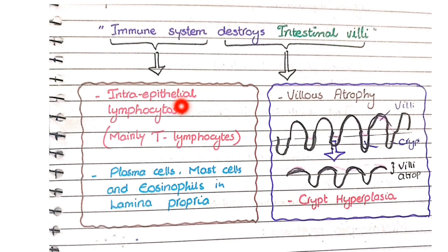So again let me revise the features of celiac disease. In celiac disease you see intraepithelial lymphocytosis, and these lymphocytes in the epithelial layers are mainly T lymphocytes. Other than these lymphocytes, you see plasma cells, mast cells, and eosinophils in lamina propria. And you see villus atrophy with crypt hyperplasia. So this concludes the pathological features of celiac disease.